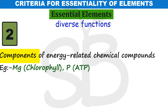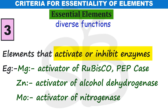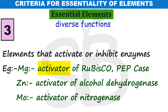Third, essential elements activate or inhibit enzymes. For example, magnesium activates the enzyme RuBisCO (ribulose-1,5-bisphosphate carboxylase/oxygenase) and also activates phosphoenolpyruvate carboxylase (PEPcase). These enzymes were discussed in the photosynthesis chapter as important enzymes. Zinc activates Alcohol Dehydrogenase, and Molybdenum activates the Nitrogenase enzyme.